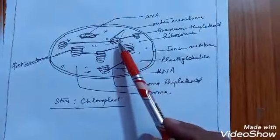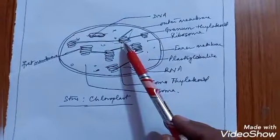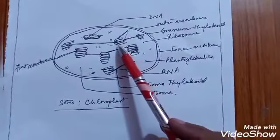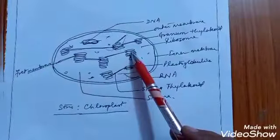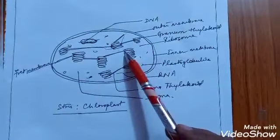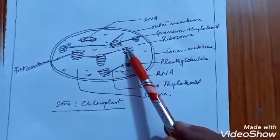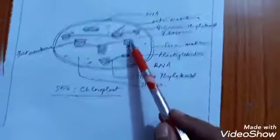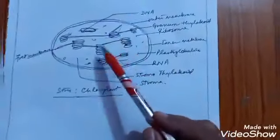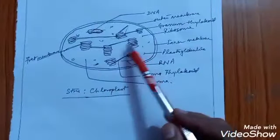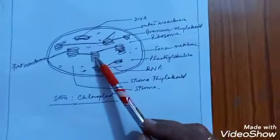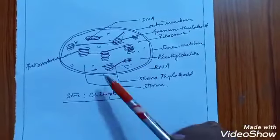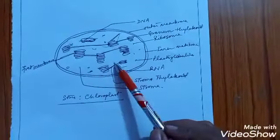The granum consists of stacks of thylakoids. There are also stroma thylakoids connecting the grana.